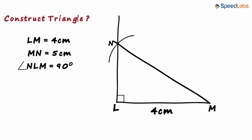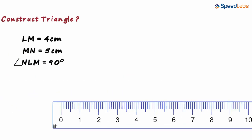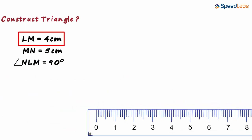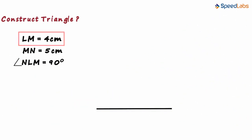And that's how we get triangle NLM. In our actual construction, let's draw line segment LM first. We use a ruler and draw a 4 centimetres line segment. This is LM which is 4 centimetres long.